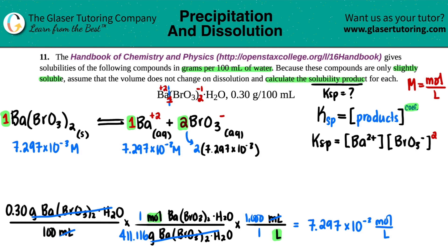So I'll say two times the 7.297 times 10 to the negative three. So two times 7.297 times 10 to the negative three, I get 0.014594 molarity.